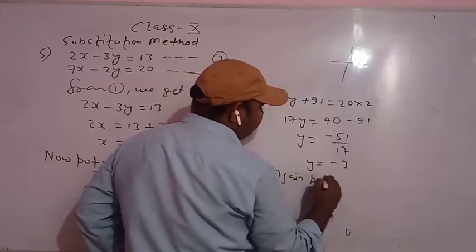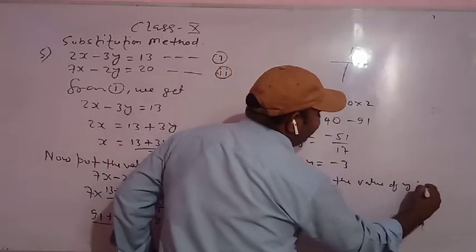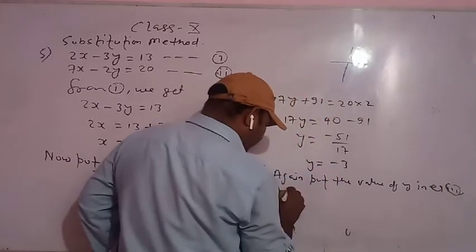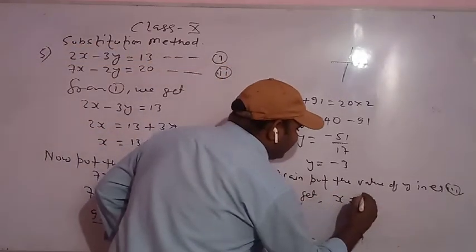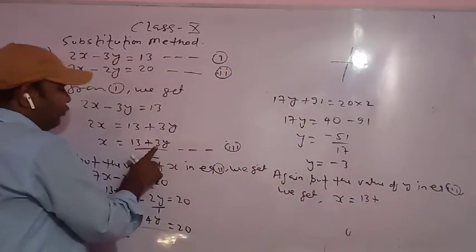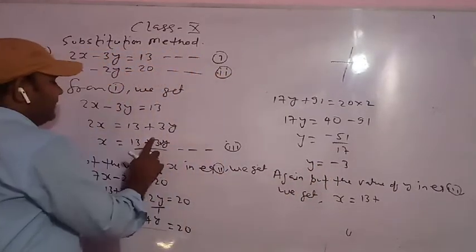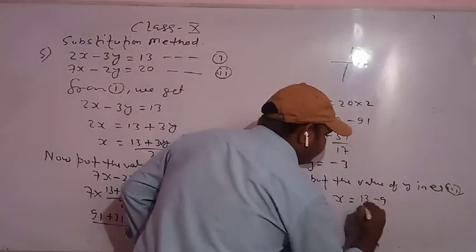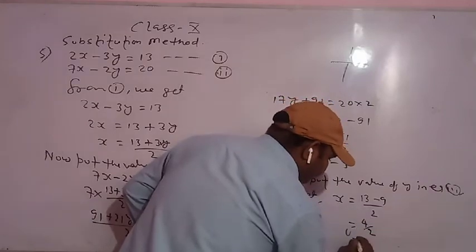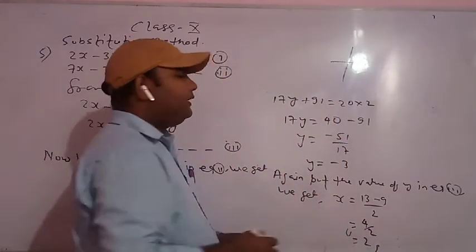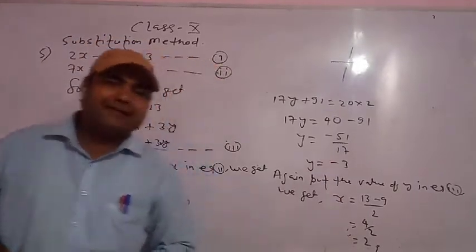Now put the value of y in equation third. The third equation is x equals 13 plus 3y by 2. The value of y is minus 3, so 3 times minus 3 is minus 9. Therefore x equals 13 minus 9 by 2, which equals 4 by 2, so x equals 2. The value of x is 2 and the value of y is minus 3.